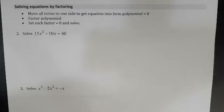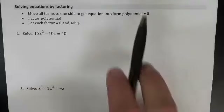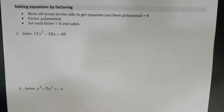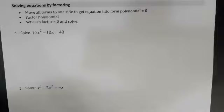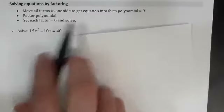So move all terms to one side to get the equation into polynomial form equals zero — that's why we do that first step. If it's equal to any other number, we can't apply the zero product rule. The steps are: first move all terms to one side to get polynomial equals zero, then factor the polynomial, then set each factor equal to zero and solve. That is the zero product rule.